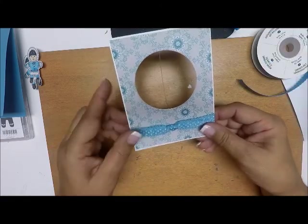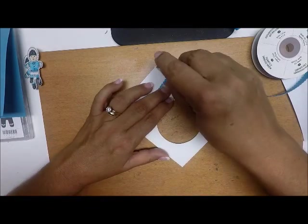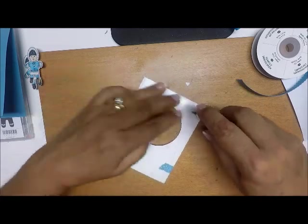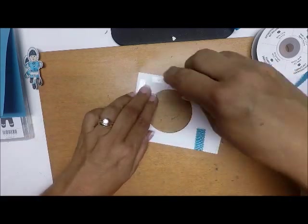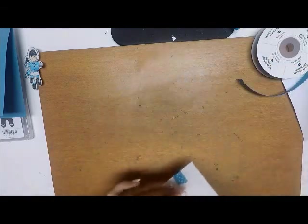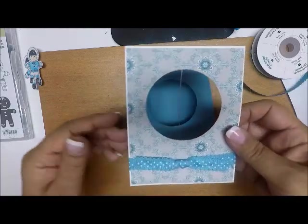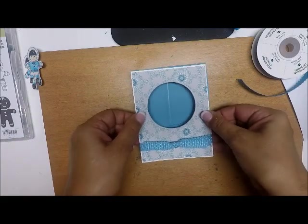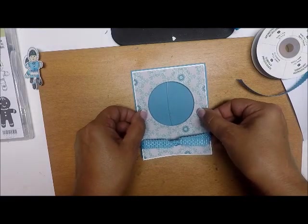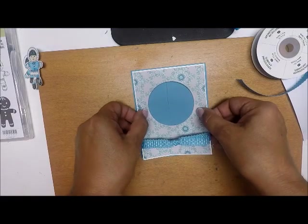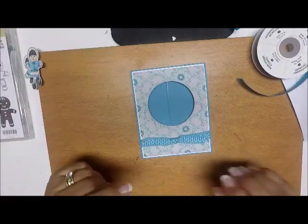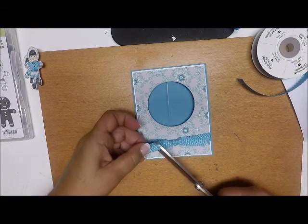Now I'm going to attach this to my card front. Again, the same as when I layered the designer series paper to the white layer, I'm going to use my circle as a guide. Now I'm going to trim my ribbon.